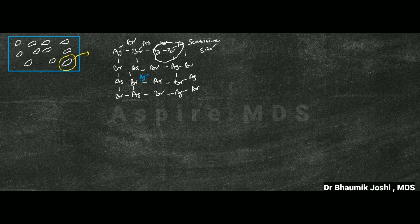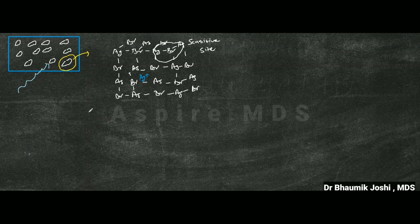Now when this film is exposed to x-rays, the x-ray acts upon a particular grain. When it acts on the grain, this x-ray will go and act on the bromide.